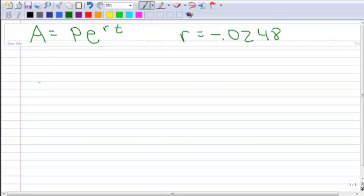All right, I'm going to show you how to use PERT to calculate half-life. If I know that my rate is negative 0.0248, in fact this comes from the last example, this is the model for the decay of strontium.